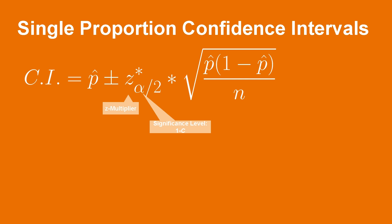In general, this multiplier must be higher for higher confidence levels. As a rule of thumb, a 95% confidence level requires a z multiplier of around 2. The standard error for a population proportion is equal to the square root of the fraction p hat times the quantity 1 minus p hat divided by the sample size n.